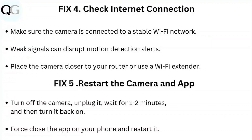Step four: check internet connection. Make sure the camera is connected to a stable Wi-Fi network. Weak signals can affect motion detection alerts. Place the camera closer to your router or use a Wi-Fi extender.